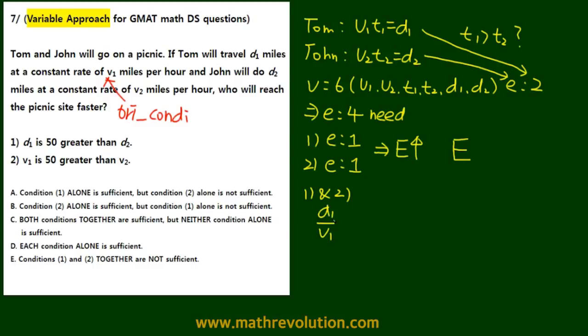T1 rewritten would be d1 over v1, and we want to know whether that's greater than d2 over v2. Well d1 apparently is 50, so 50 plus d2 over 50 plus d2, and we want to know whether that's greater than d2 over v2.